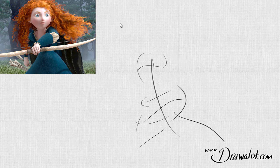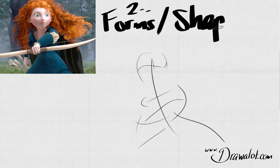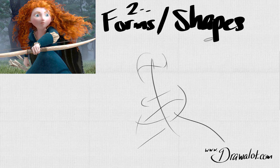In this next step we're going to do the basic forms or shapes. A shape would be like a square; a form would be like a cube — a form has volume and mass, whereas a shape is just a flat basic geometric shape. So we're going to use both. This is a 2D drawing, but in our mind we need to think of the form, the volume — how big and round her arm is and the different parts of her body.